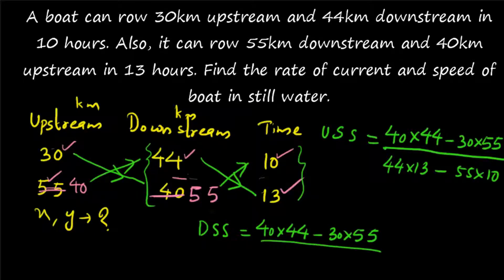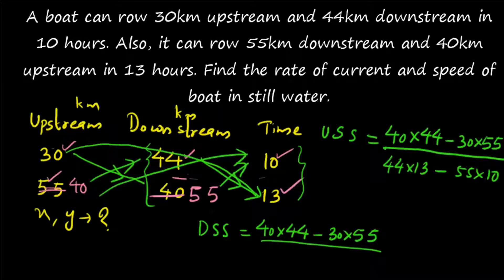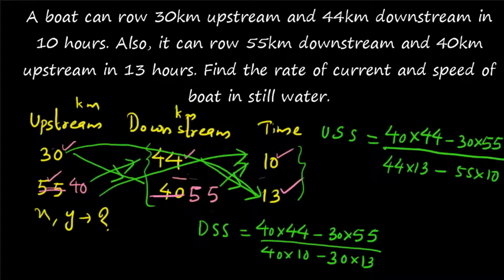For downstream speed, you consider the upstream distances and their cross products with time. The denominator for downstream speed is (40 × 10) − (13 × 30). All quantities should be positive — take any order as long as the result is positive. So these formulas give you the upstream speed and downstream speed. Now, 40 × 44 − 30 × 55 = 110.